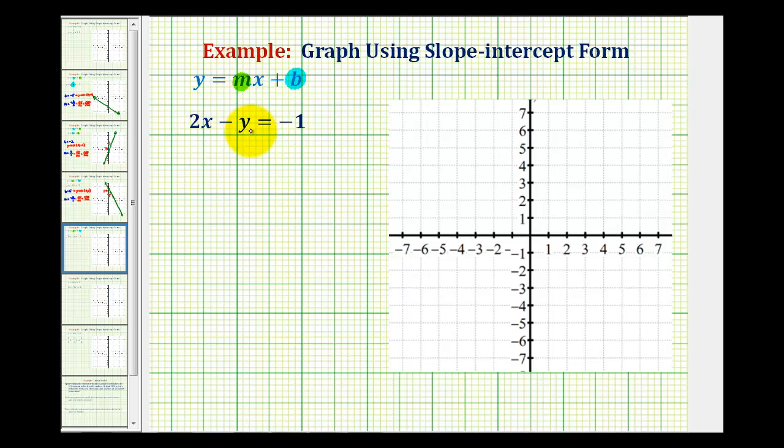The first thing we need to recognize here is that we do have to solve this equation for y, so the equation is in slope-intercept form. So to isolate y, the first thing we'll do is subtract 2x on both sides.